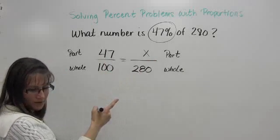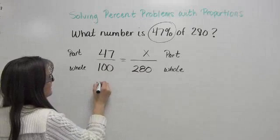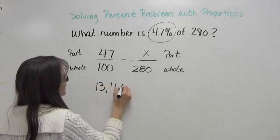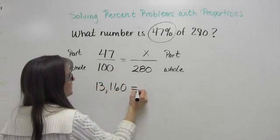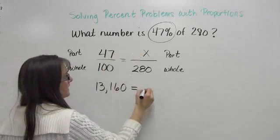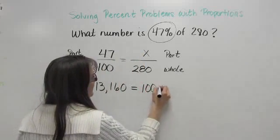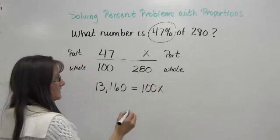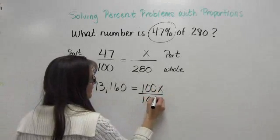When I multiply 47 times 280, I get 13,160, and that's going to be equal to 100 times x, which is 100x. To get x by itself, I'll need to divide both sides by 100.